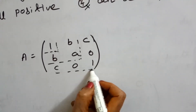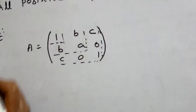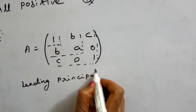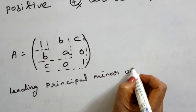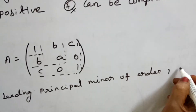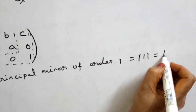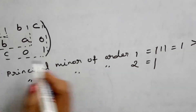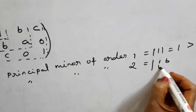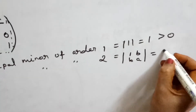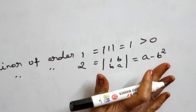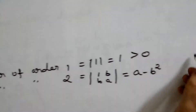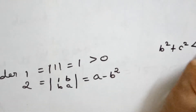Leading principal minor of order 3 is the whole matrix determinant. Checking order 1 first: det([1]) = 1, which is greater than 0. Leading principal minor of order 2 = det([[1, b], [b, a]]) = a - b². Given the condition b² + c² < a < 1, we have a - b² > c² > 0, so this is positive.